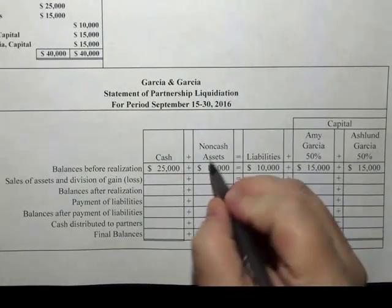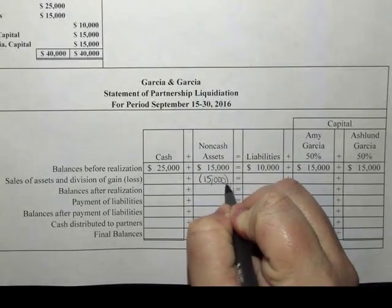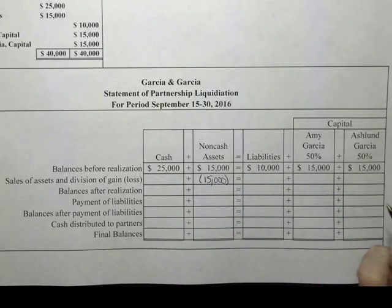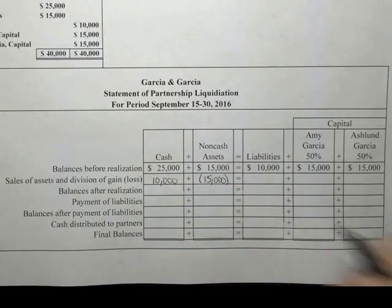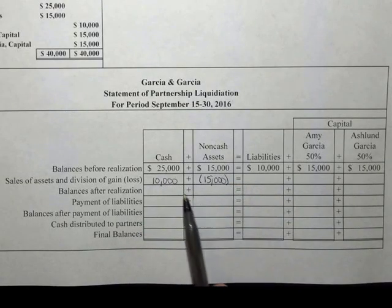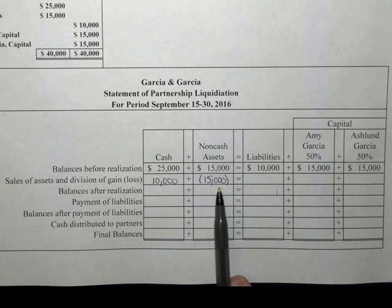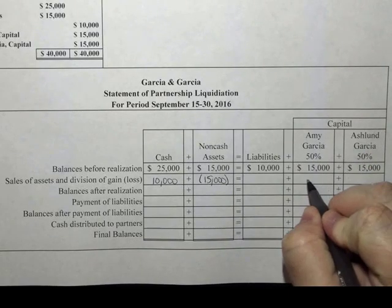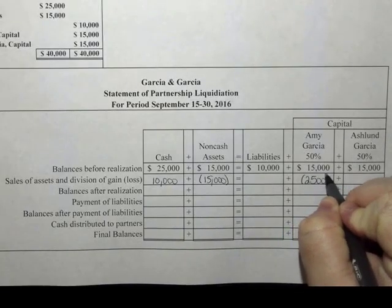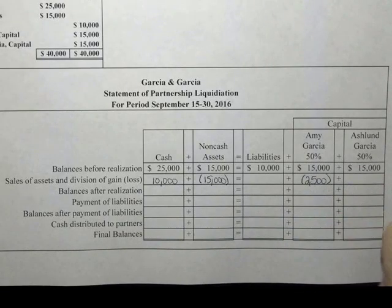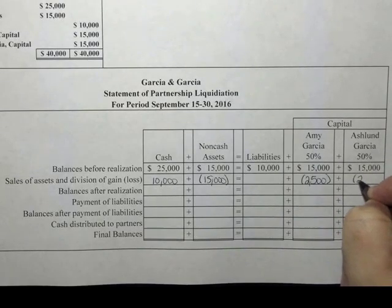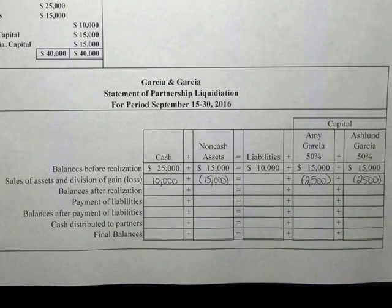We are going to take $15,000 from the non-cash assets and add $10,000 to the cash. We have taken a $5,000 loss on the sale of our assets. We are going to split that $5,000 loss 50-50 between Amy and Ashland, taking away $2,500 from Amy Garcia's capital and $2,500 from Ashland Garcia's capital.